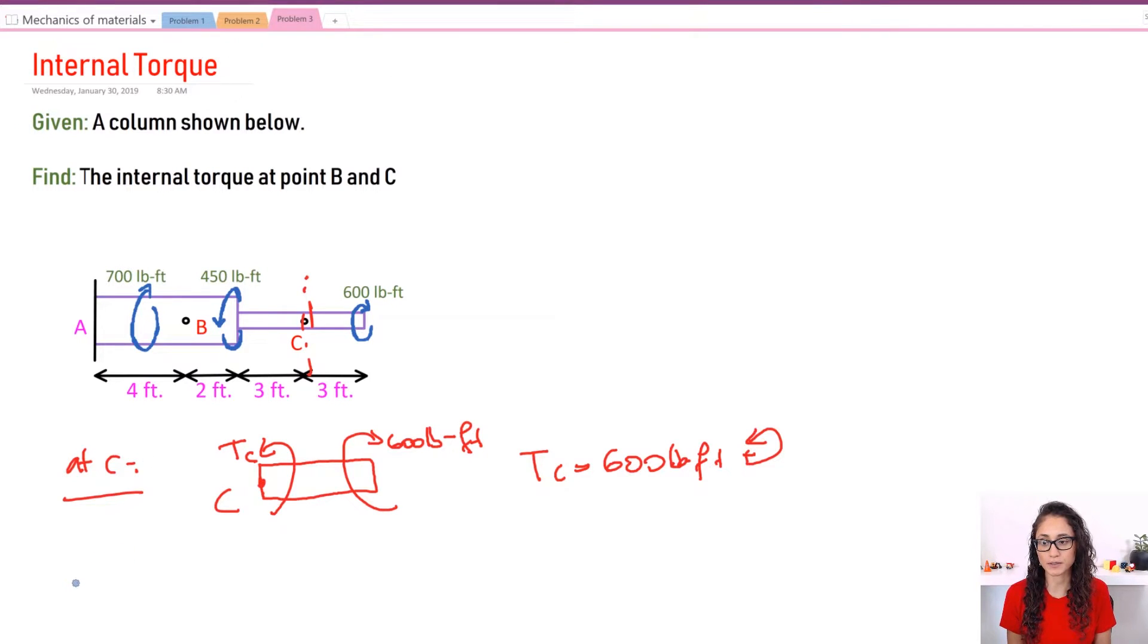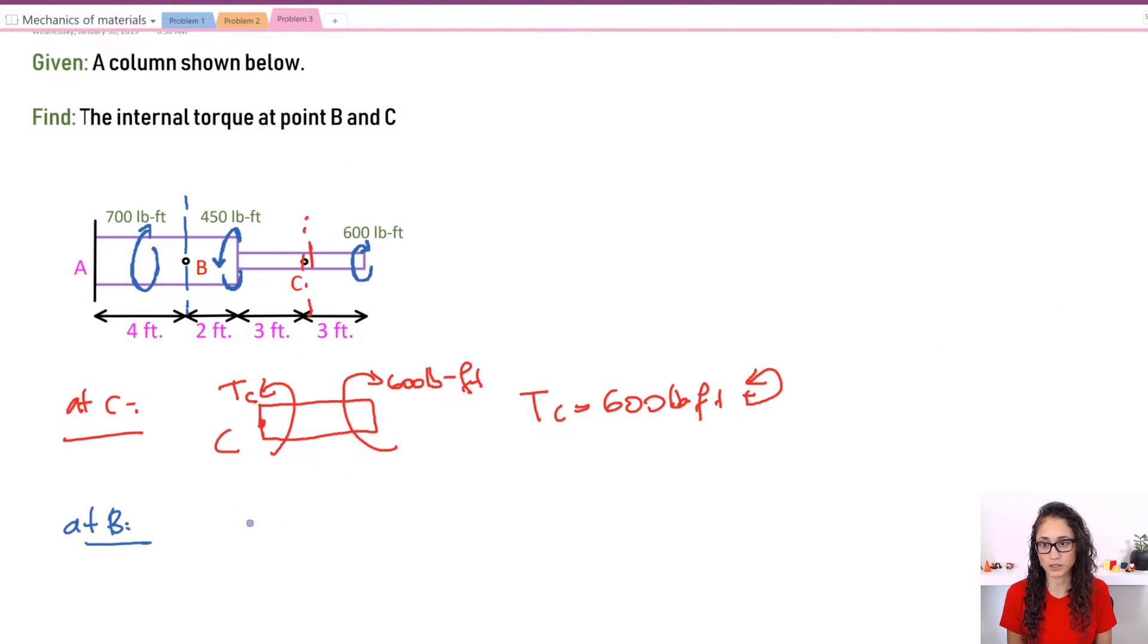Now TB, so if we cut at B which is here, let me draw it too so it's easier for us to see. So let's say this is my point B, and then here we have the segment C. This is 600, right? And in here we have 450. Now note that 600 and 450 are going the opposite direction.